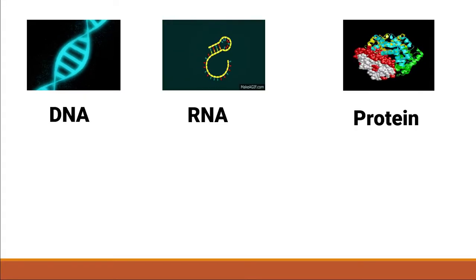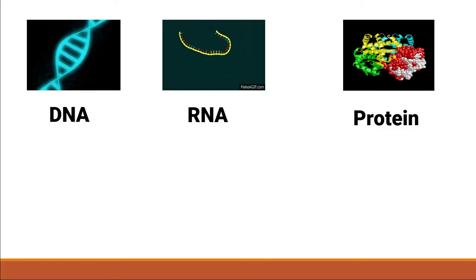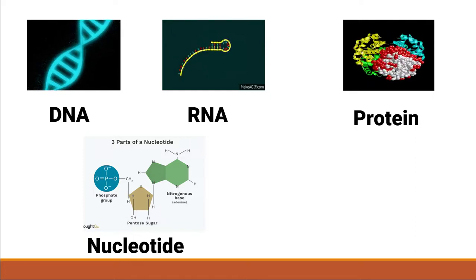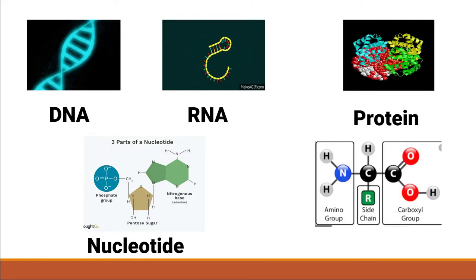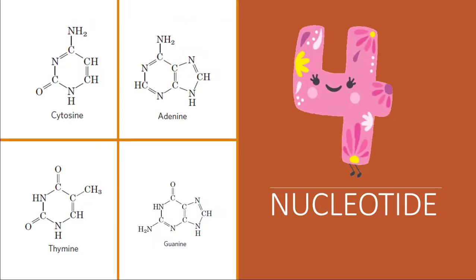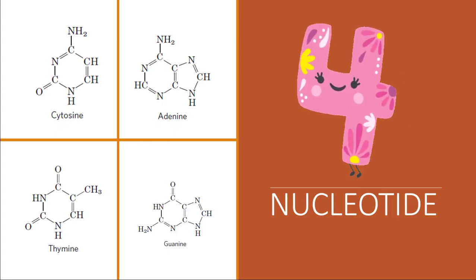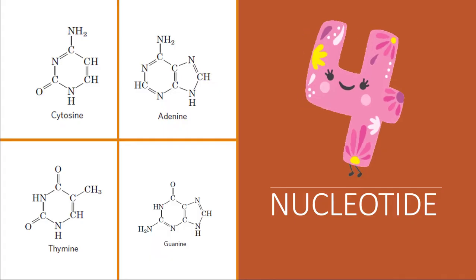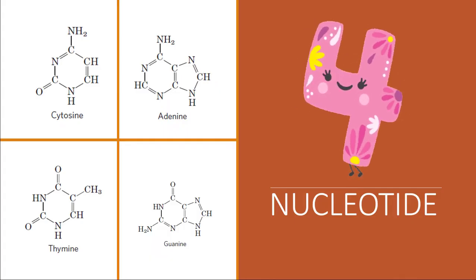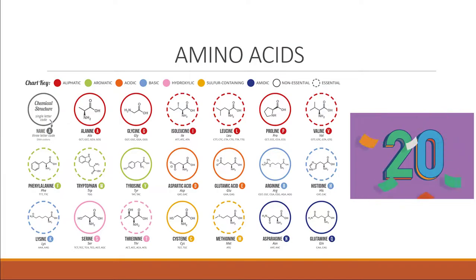DNA, RNA, and protein are all polymers made up of monomers. DNA and RNA are made up of monomers called nucleotides, and protein is made up of monomers called amino acids. For DNA and RNA we have four different types of nucleotide: cytosine, adenine, guanine, and thymine for DNA — and in RNA, thymine is replaced with uracil. For amino acids, we have 20 different types.